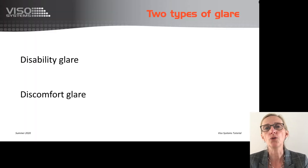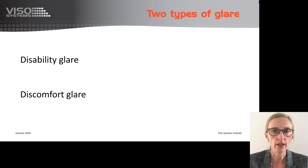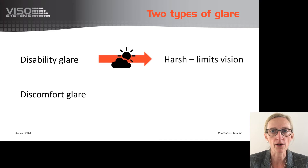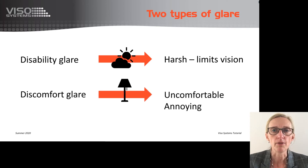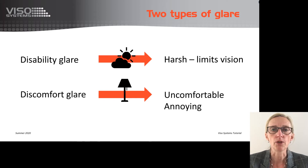There are two types of glare. Disability glare, which might be caused by car headlights or the sun, limits vision. And discomfort glare, which doesn't limit vision but is simply uncomfortable or annoying. This is what we encounter in indoor environments, and it is also what UGR is all about.